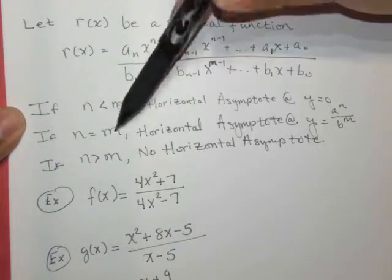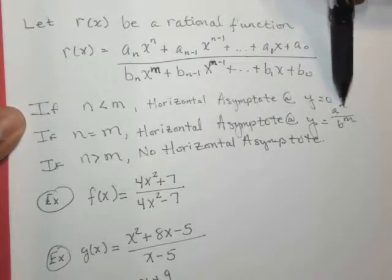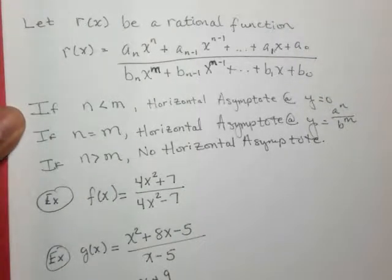If they are the same, if these two are equal, if n equals m, then we have a horizontal asymptote at y equals a to the nth over b to the nth. That's just the ratio of the coefficients.